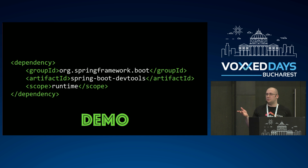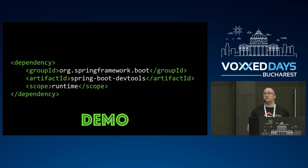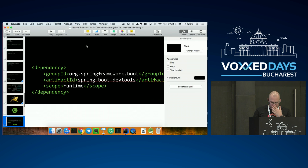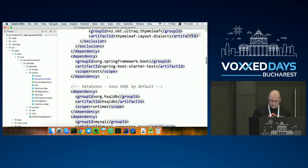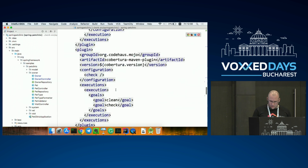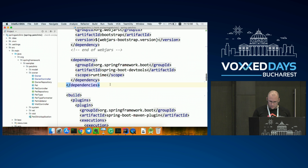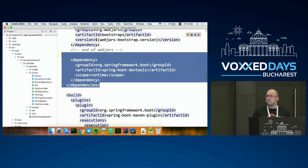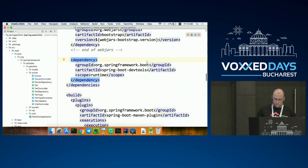If you use Spring Boot, there is a tool called DevTools. If you define this DevTools dependency in pom.xml — that's the only thing you need to do — and start the application, Spring Boot detects that the feature is configured and will load the classes coming from disk, not from jar files, through a dedicated custom class loader. All the dependencies defined in your project go through a different class loader. So you have two main class loaders in the application.